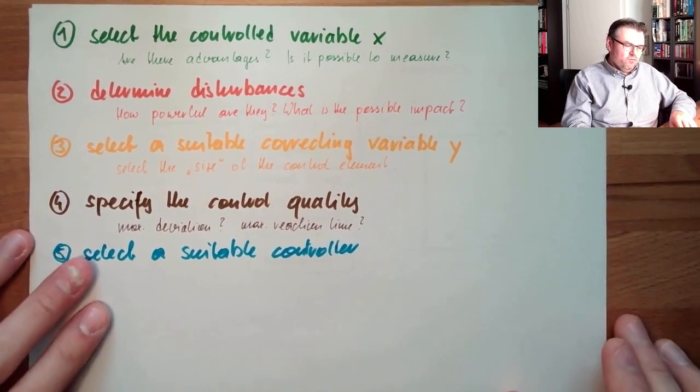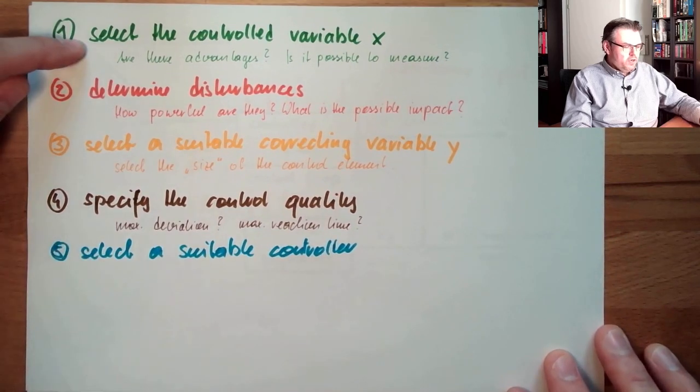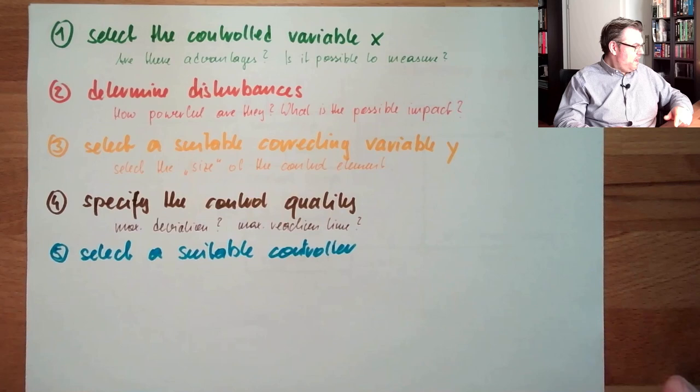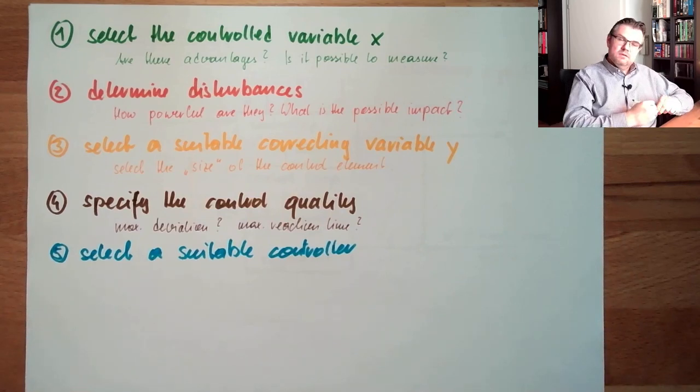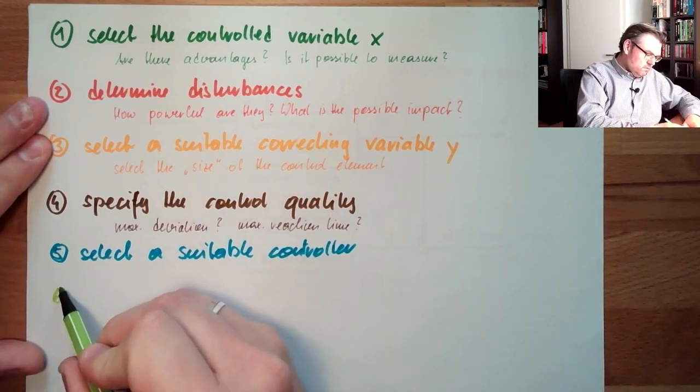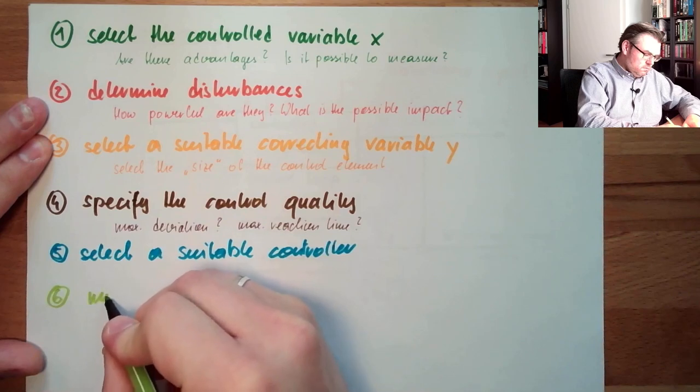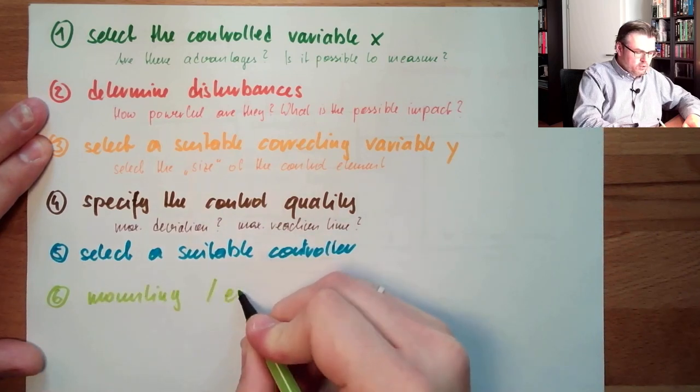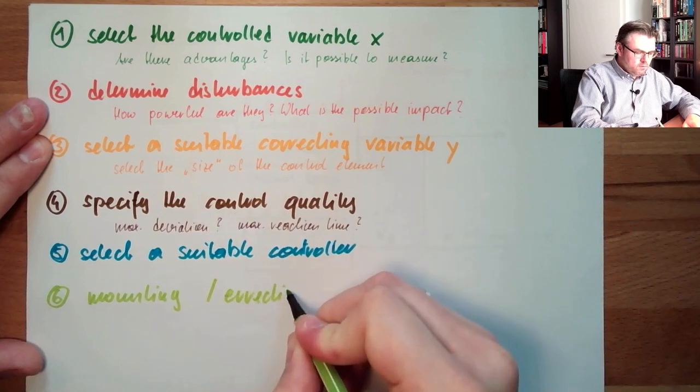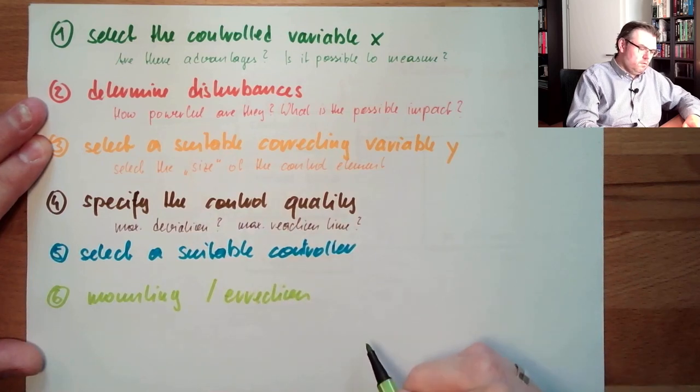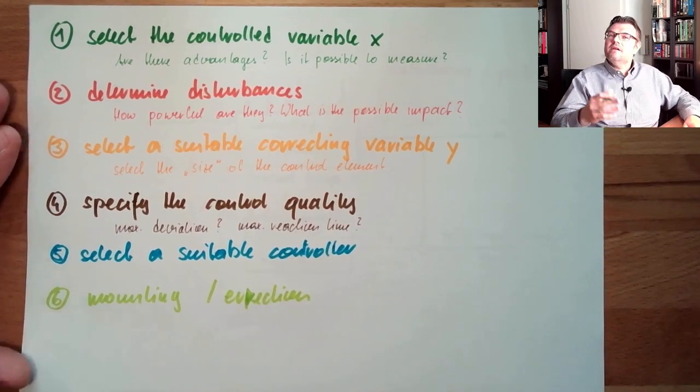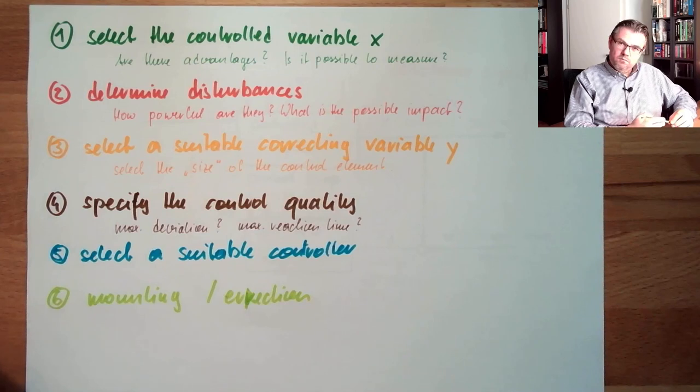Now that I have a controller, now that I know what to measure, now that I know how to influence, and I have the controller, I can start to mount this. Six: mounting and erection. Mounting and erection of the older stuff. Put it together.